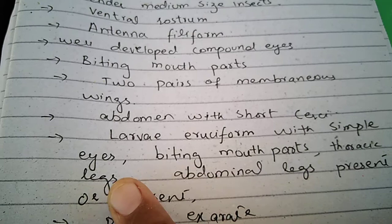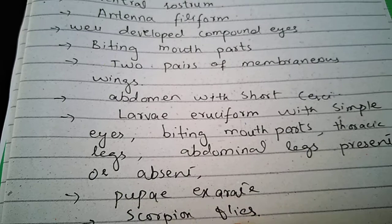Abdominal legs are sometimes present in larvae and sometimes not. Pupae are exarate, and the scorpion flies are the examples of the order Mecoptera. This is a completion of the topic, thank you.